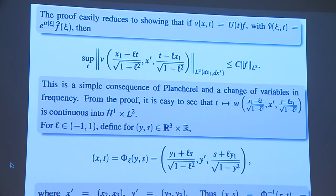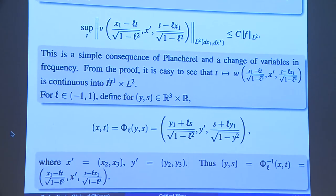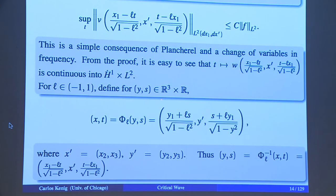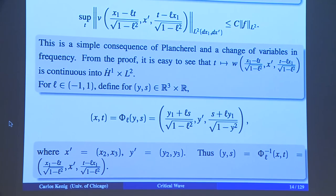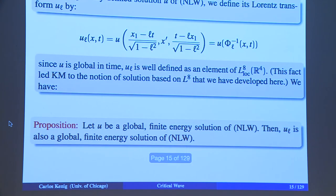The proof boils down to the following: if you define v-hat by multiplying by the wave group e to the i t |ξ|, this is true, and to prove it you only need the Plancherel theorem followed by a change of variables in frequency space. It is elementary if you see it the right way. Also, this is continuous in time in this norm.